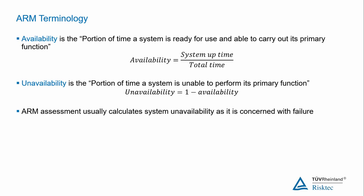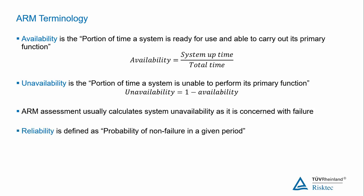Remembering this relationship is important as ARM calculations are usually focused on component failure and as a result calculate the unavailability. The reliability of a system is defined as the probability of non-failure in a given period, which is generally taken as being either the mean time between failures or the expected failure rate within a given period.